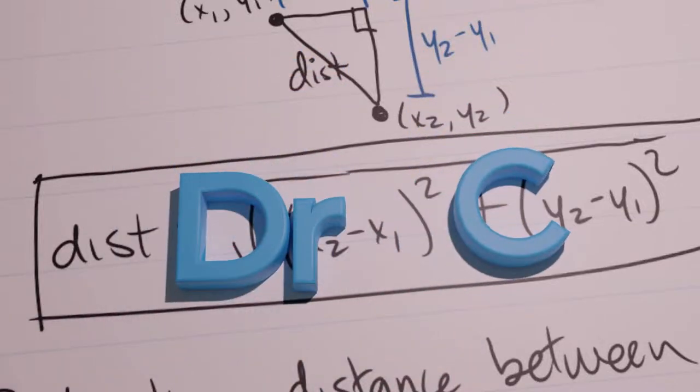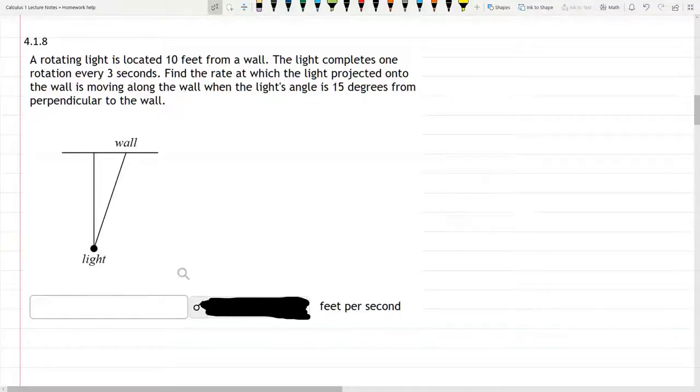This related rates problem is a little bit tricky to visualize, or at least it was for me. We have a light source, and it's rotating, so I'm highlighting the light source in a highlighter.